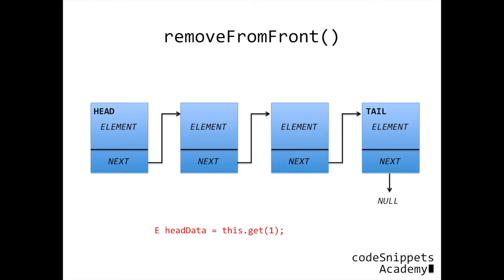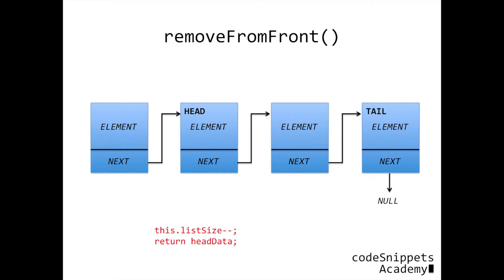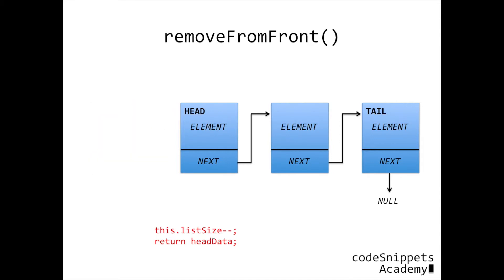To remove from the front of the list, we first store the head's data into a variable. Then we move our head to the next element. Then we decrement our list size and return the head data. Since the linked list has no connection with the previous head, the Java garbage collector will come by and take it away. Since it doesn't matter how long our linked list is to remove the head, this will take constant time.